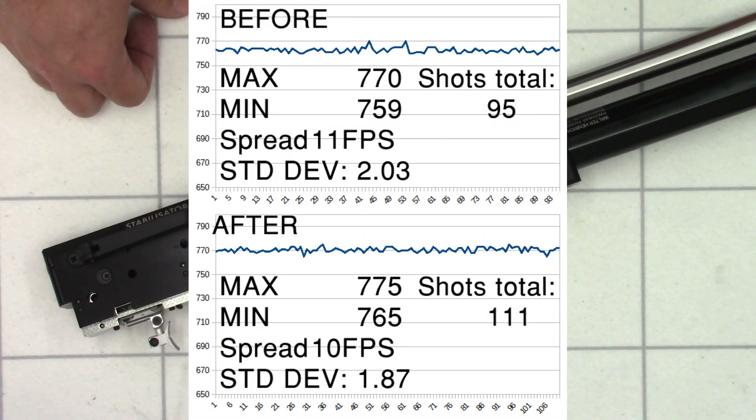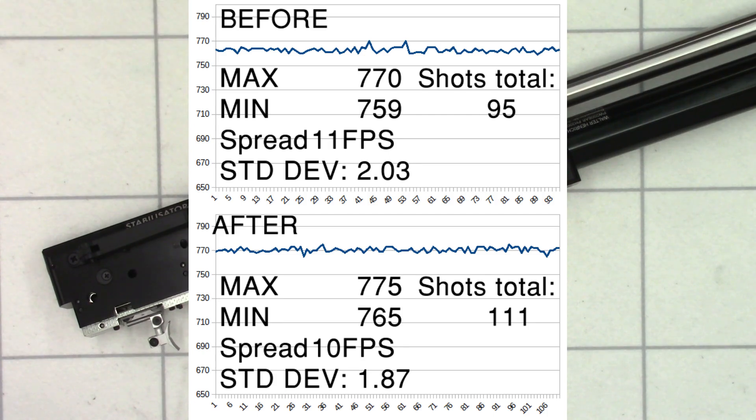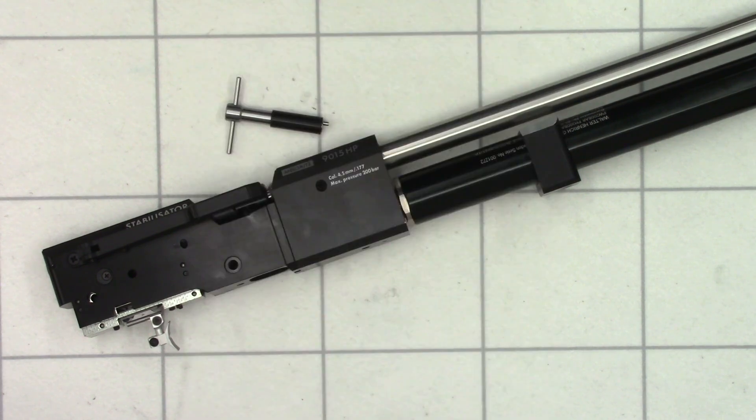I'll put both the graphs on screen now so you can see the before and after. And as you can see from the graphs there, we did average an extra 15 or 20 shots per fill. So that's filling up to 200 bar and then shooting all the way down to around 100 bar. We didn't see a big improvement in consistency or anything like that. Although saying that the rifle is still incredibly consistent over the full shot string.